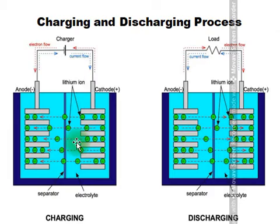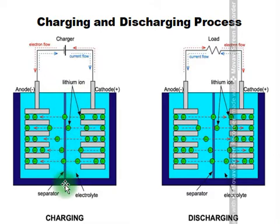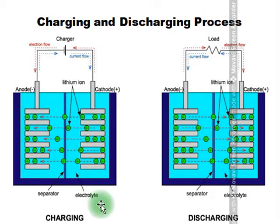This lithium-ion battery works on the principle of movement of lithium ions and electrons. Looking at the diagram, two configurations are shown: one during charging, where an external source is connected, and one during discharging. The anode terminal, cathode terminal, separator arrangement, and electrolyte solution are all visible.